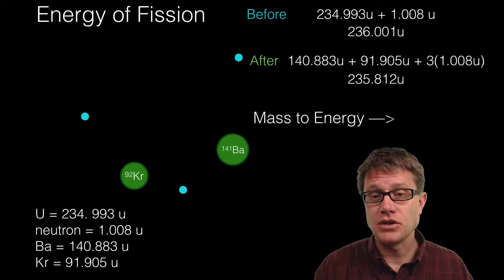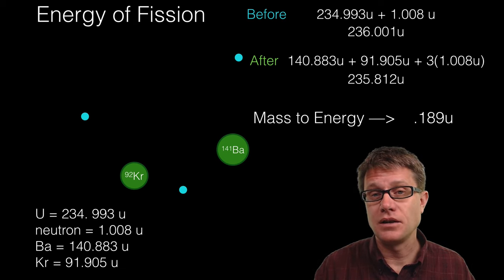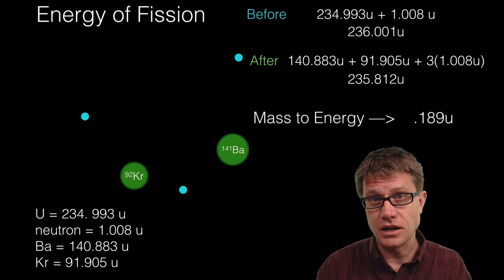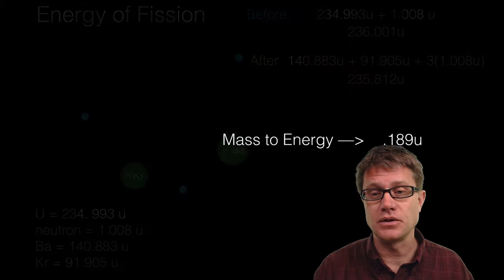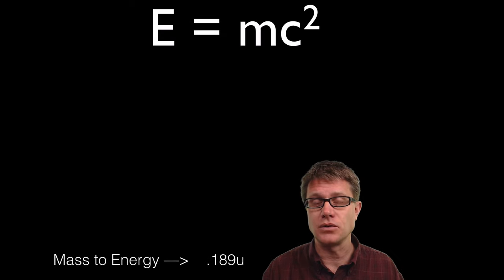And so how much energy? It is going to be 0.189 units. So that is the mass change. And if we want to figure out the amount of energy, then we are going to have to use Einstein's equation, E = mc².